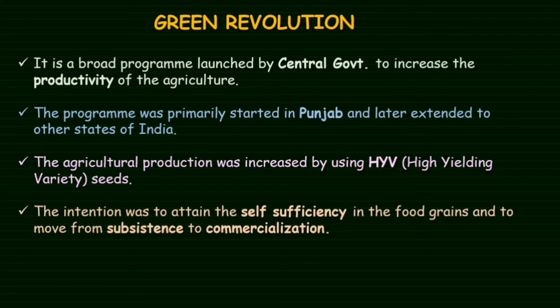The intention of the Green Revolution was to attain self-sufficiency in food grains and to move from subsistence farming to commercialization — meaning that crops could be used for sale and to generate revenue.